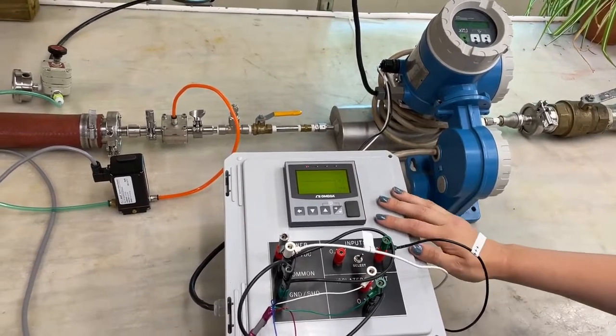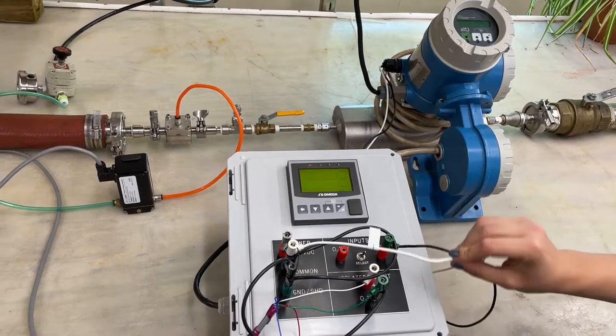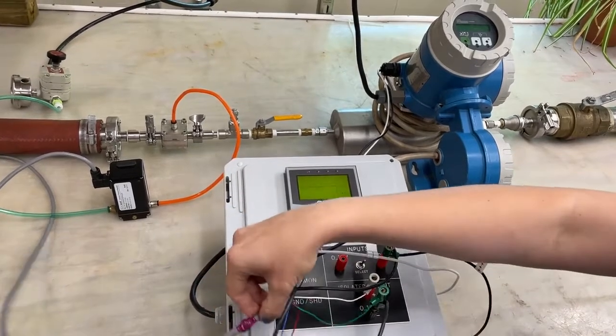Here is our Omega PLC, this is the signal coming in from the flow meter and then it comes out to drive the QPV.